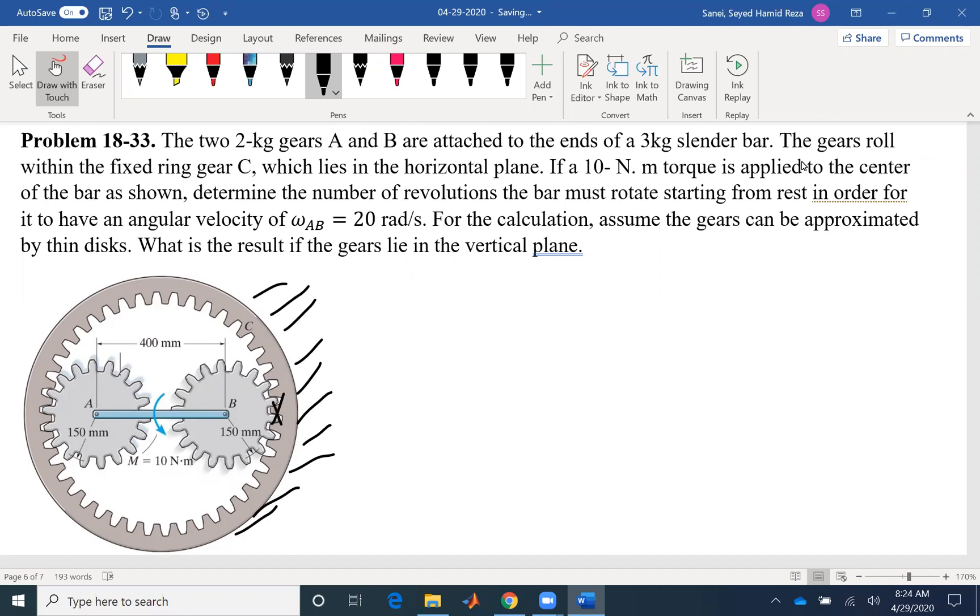If the gear is fixed, the point of contact here would have a zero velocity, which lies in a horizontal plane. That's also an important information, which means that we are not going to have any gravitational force. The work done by gravitational force will be zero and also there won't be any gravitational energy.